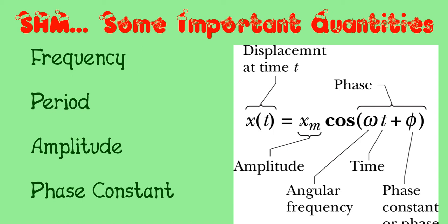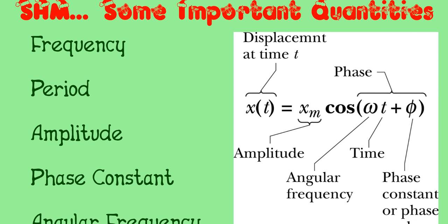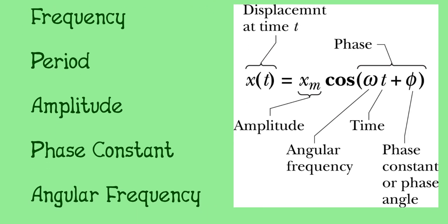The next three quantities are quantities that appear in our equation: amplitude, phase constant, and angular frequency.